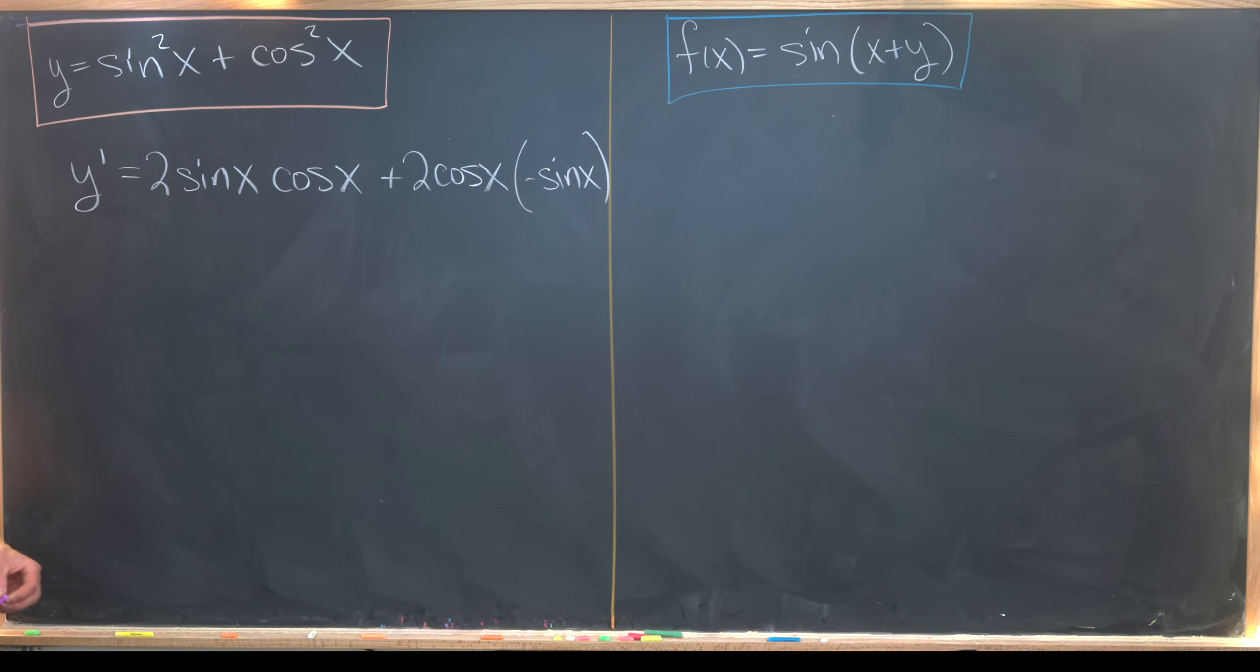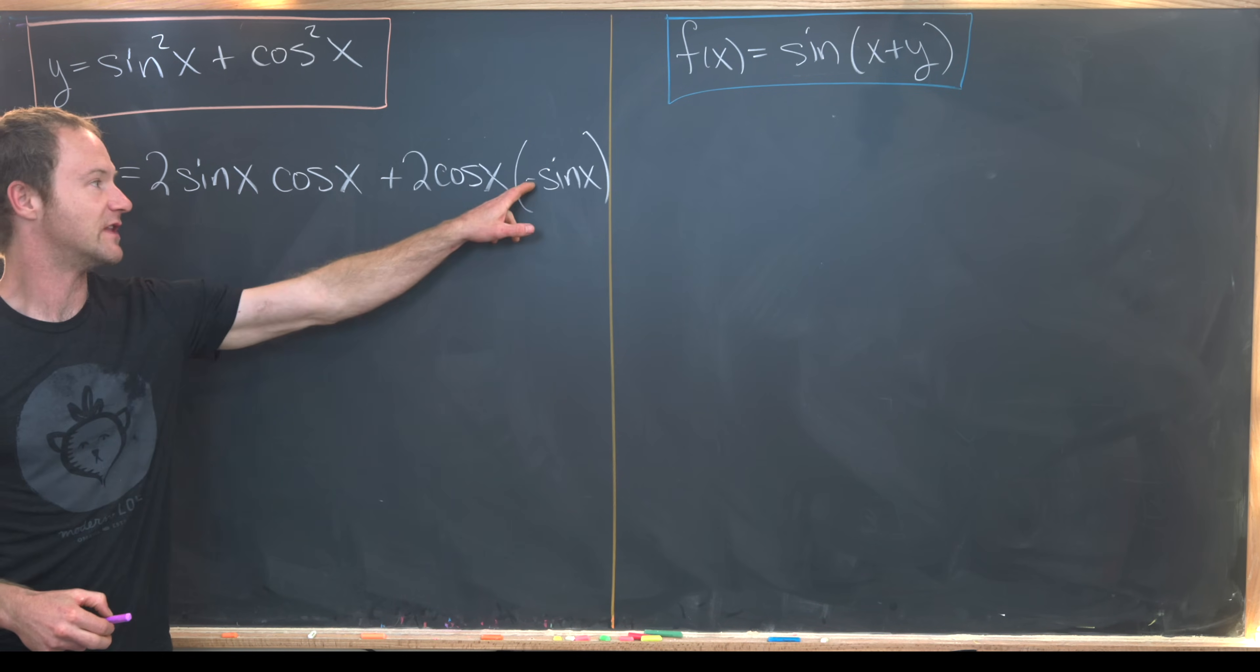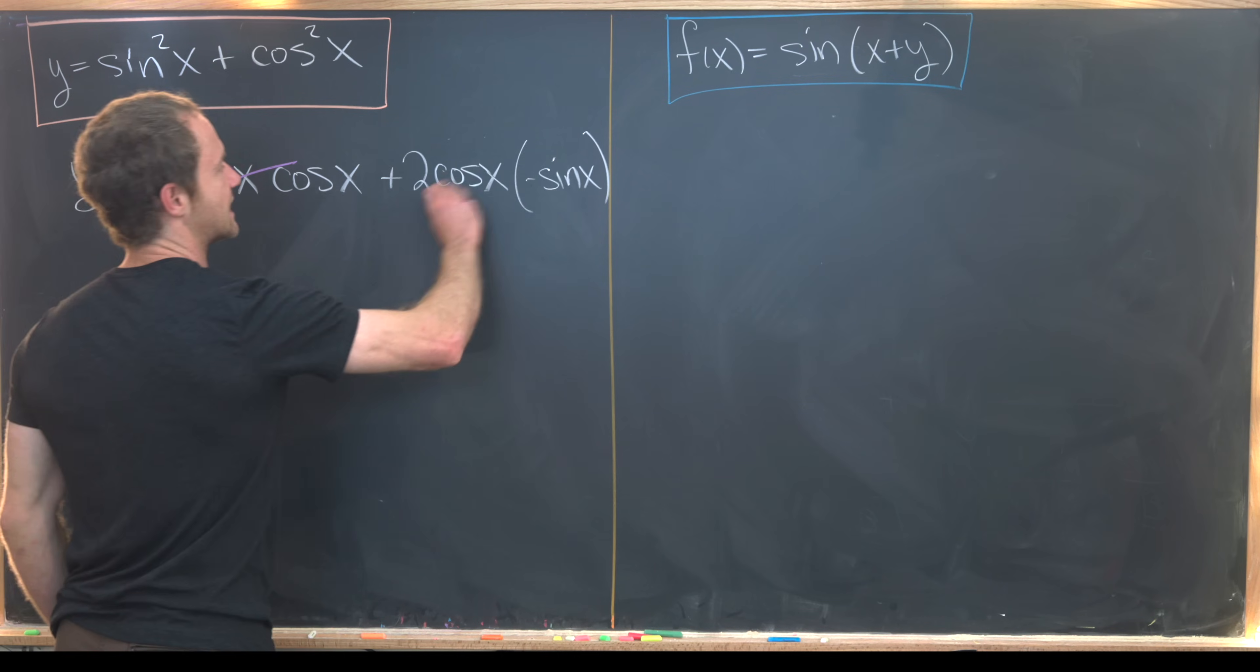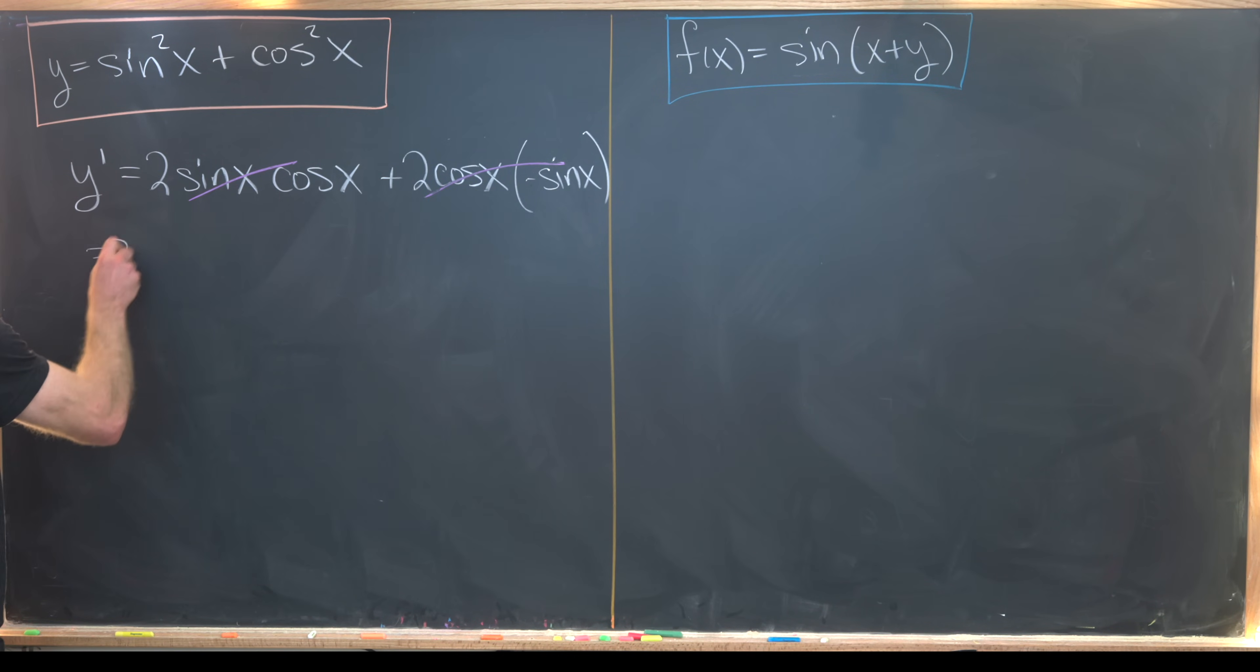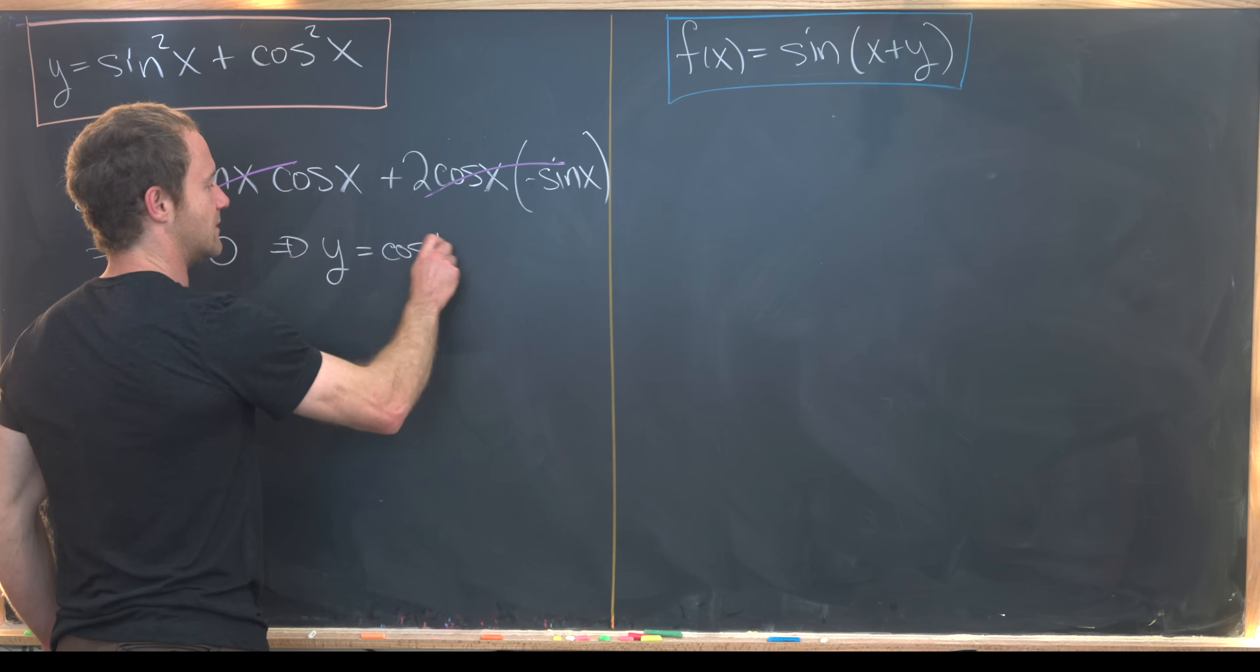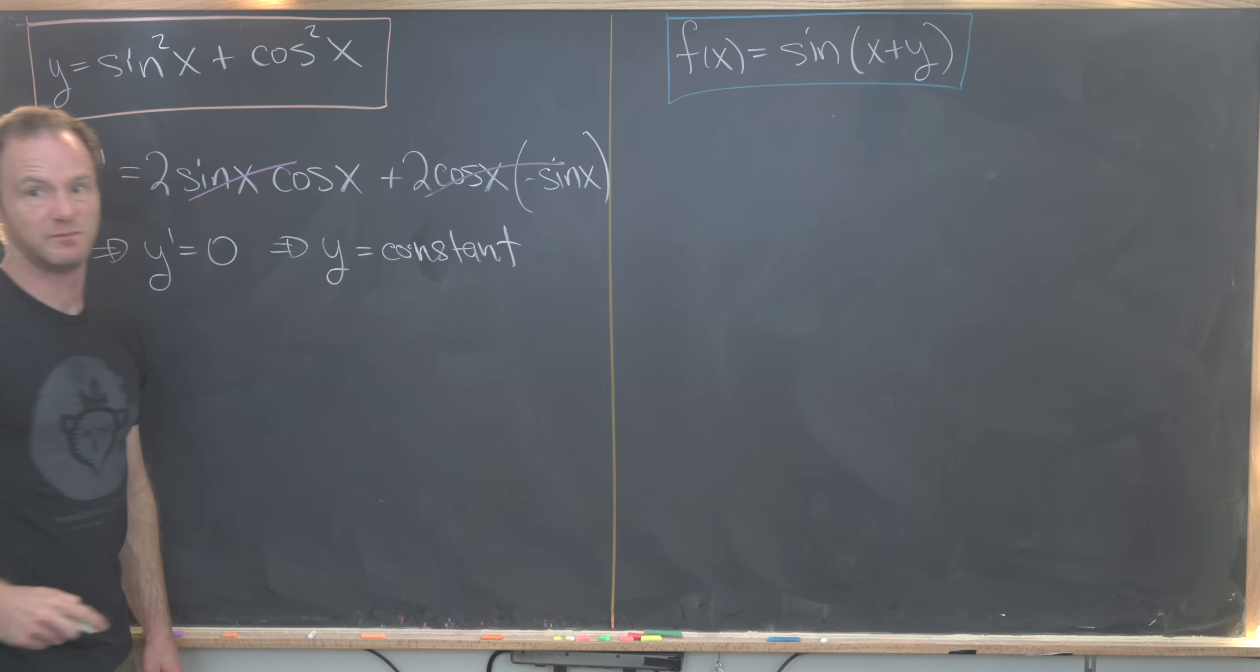Now we can see what will happen. Here we have 2 sin(x) cos(x) and here we have -2 sin(x) cos(x). Those clearly cancel and tell us that y' is always equal to zero. If y' equals zero, that means y equals some constant, just by the fundamental theorem of calculus, taking the anti-derivative of both sides.